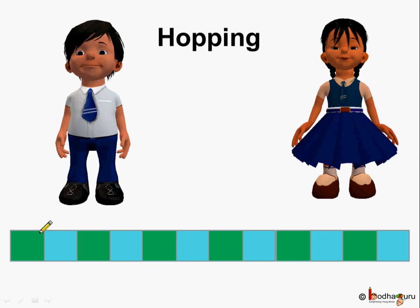This is Aman and this is Khushi. Aman and Khushi were hopping on the squares. It was fun hopping on the squares.